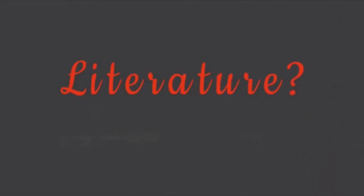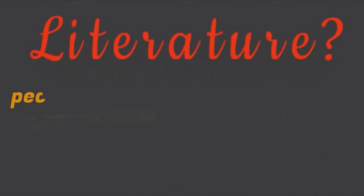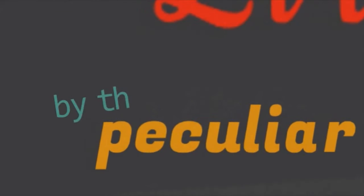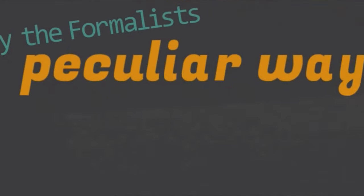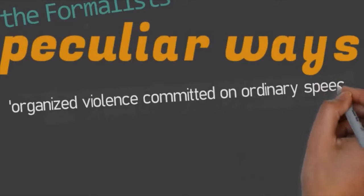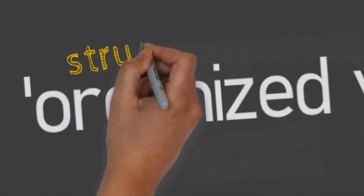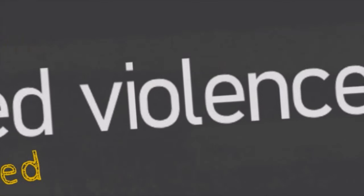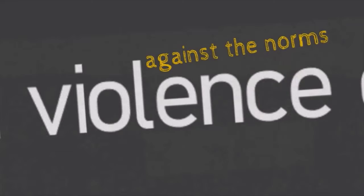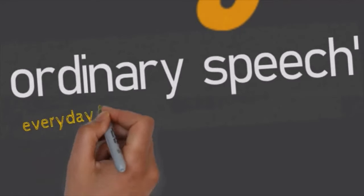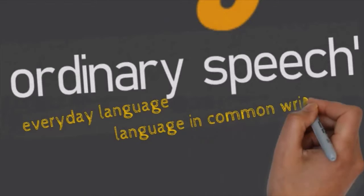The next definition deals with the use of language in peculiar ways. As stated by the formalists, literature is created by an 'organized violence committed on ordinary speech.' Here, 'organized' means structured or reordered; 'violence' means it goes against the norms or rules of language; and 'ordinary speech' refers to everyday language commonly used in regular writing.